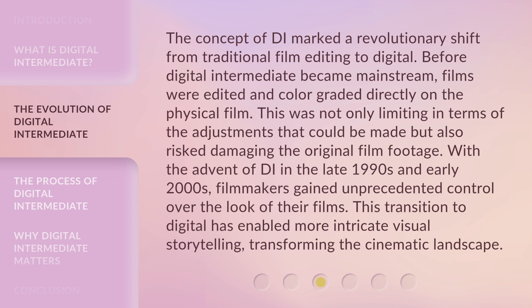The concept of DI marked a revolutionary shift from traditional film editing to digital. Before Digital Intermediate became mainstream, films were edited and color-graded directly on the physical film. This was not only limiting in terms of the adjustments that could be made, but also risked damaging the original film footage. With the advent of DI in the late 1990s and early 2000s, filmmakers gained unprecedented control over the look of their films. This transition to digital has enabled more intricate visual storytelling, transforming the cinematic landscape.